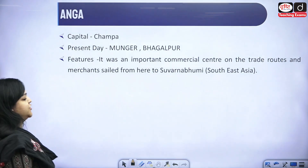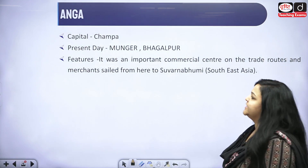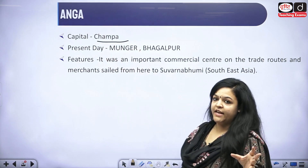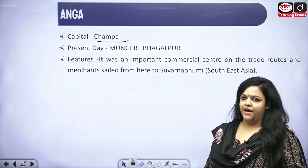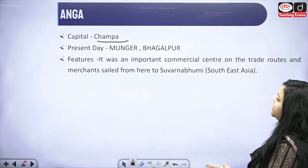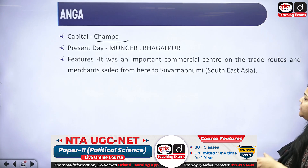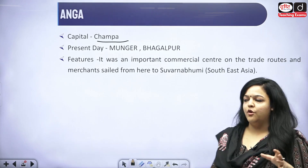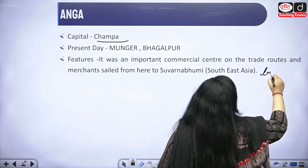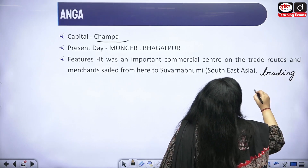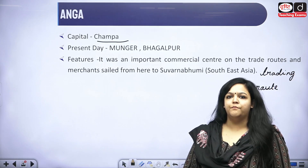The first Mahajanpad is Anga. The capital of Anga is Champa. Its present-day location is Munger or Bhagalpur in Bihar. Its most important feature is that it was an important commercial center on trade routes, and merchants sailed from here to Suvarnabhumi, which is Southeast Asia. So this place was located on an important trading route.